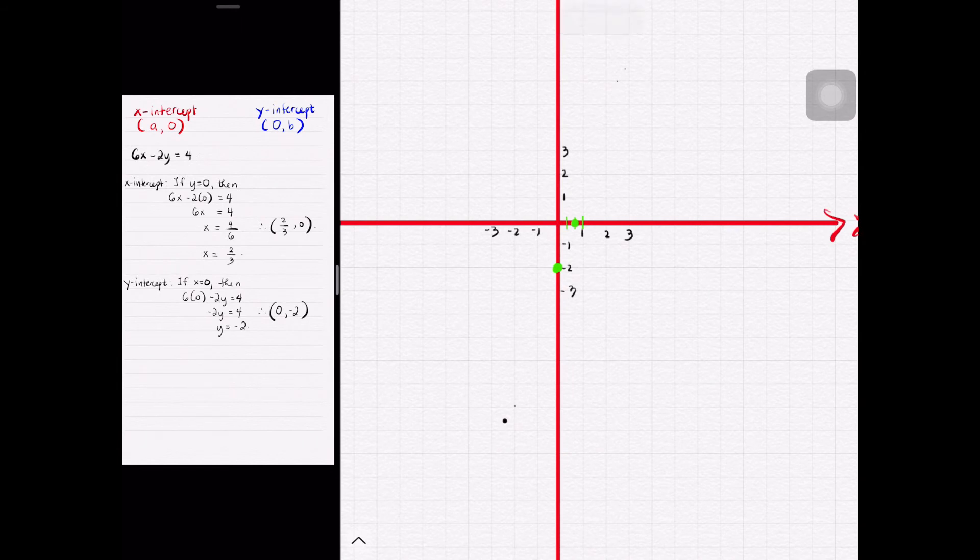So yes, connecting these two points will now be the graph of the equation 6x - 2y = 4.